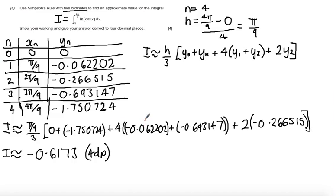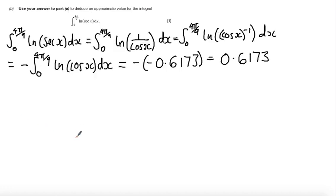Let's see how the marks are rewarded. There are two standalone marks: one if you get three values correct, and a second if you get all five correct. You get a method mark for the correct formula and correctly identified width π/9. Finally, you get an answer mark for -0.6173. In part B, you get one standalone mark for 0.6173. I hope you followed the solution and were able to mark your question. Thank you.